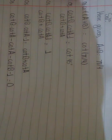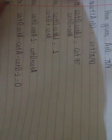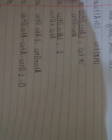Bringing all terms to one side: cot(b) times cot(a) minus cot(a) minus cot(b) minus 1 equals 0. You can arrange this in your own way, but this arrangement is simpler for us to understand.